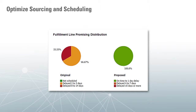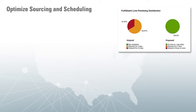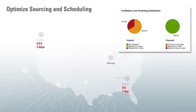Along with order management, Global Order Promising, or GOP, calculates accurate shipment and delivery dates by considering actual availability, as well as order processing, production and transit lead times. It automatically selects the lowest cost source and delivery method that meets the customer's needs.